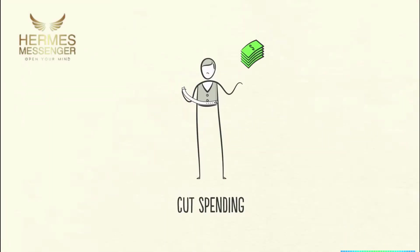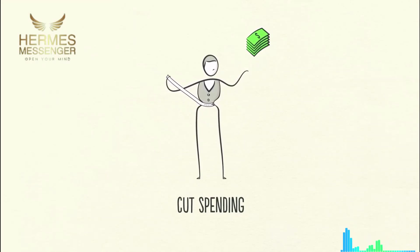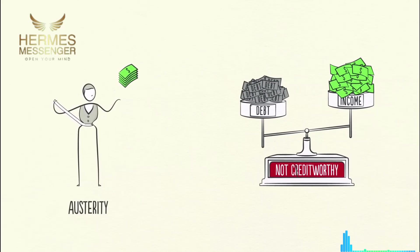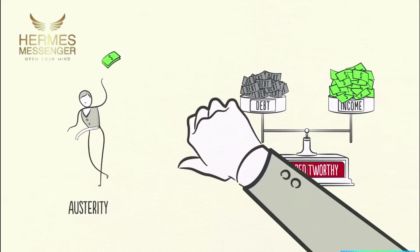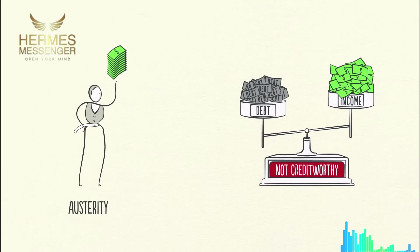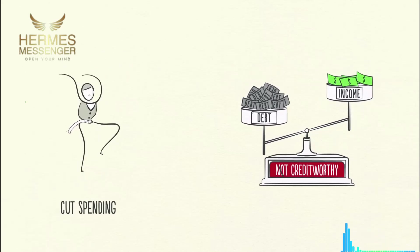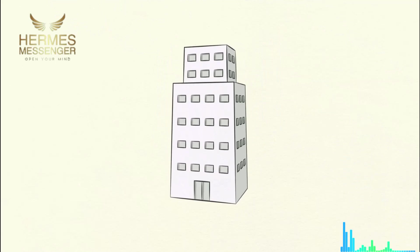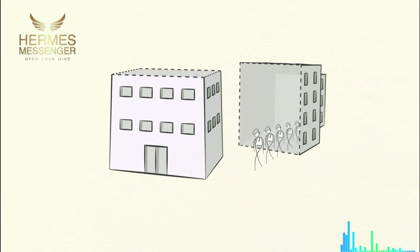Usually spending is cut first. People, businesses, and even governments tighten their belts and cut their spending so that they can pay down their debt — this is often referred to as austerity. When borrowers stop taking on new debts and start paying down old debts, you might expect the debt burden to decrease. But the opposite happens. Because spending is cut and one man's spending is another man's income, it causes incomes to fall. They fall faster than debts are repaid and the debt burden actually gets worse. This cut in spending is deflationary and painful. Businesses are forced to cut costs, which means less jobs and higher unemployment.